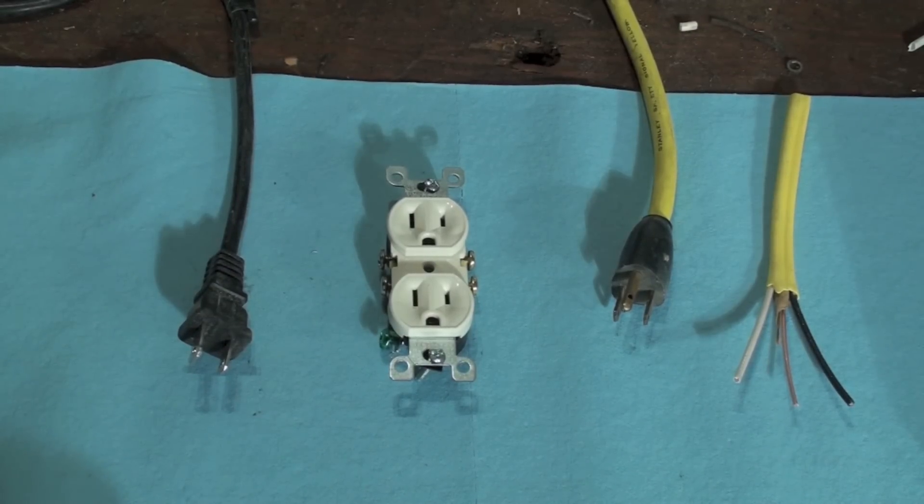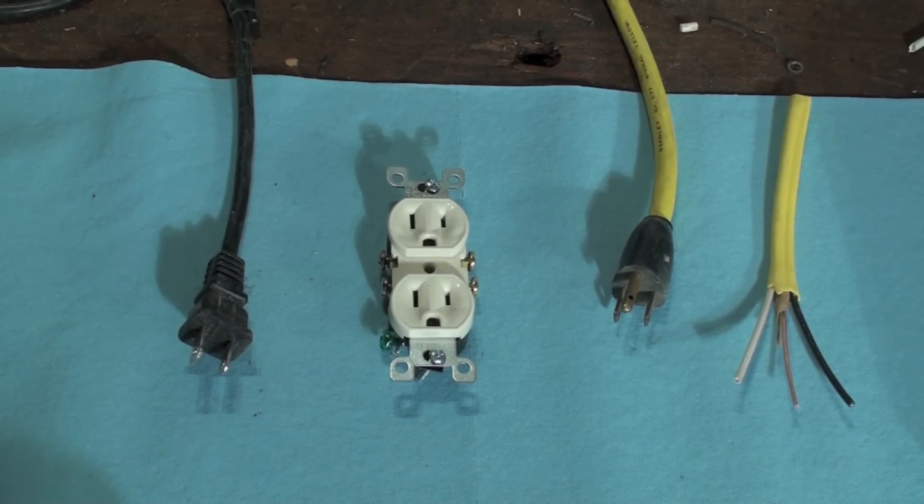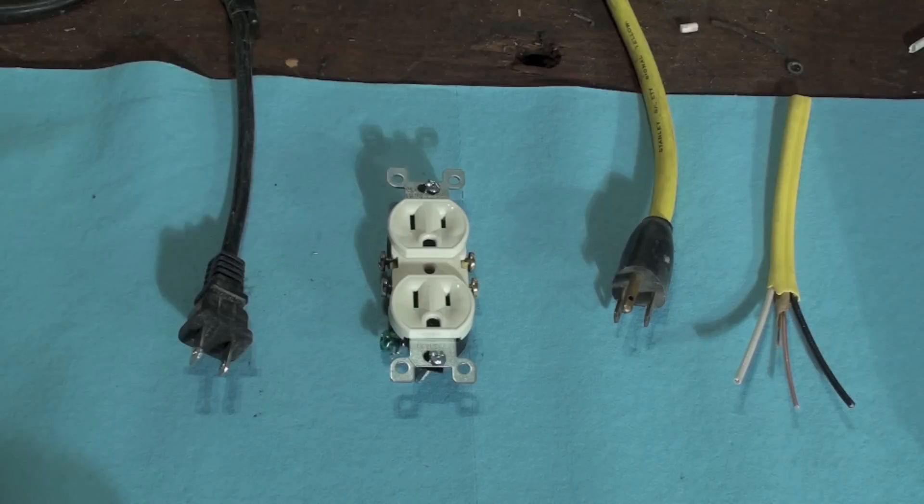Okay, what the heck is polarity in AC current? Well, AC current is different than DC because DC has a positive and a negative. AC switches positive and negative 120 times a second, at least in the US.